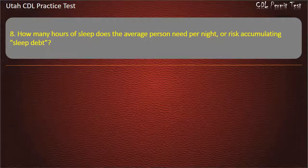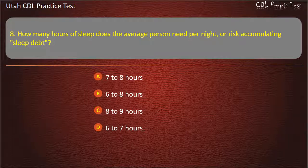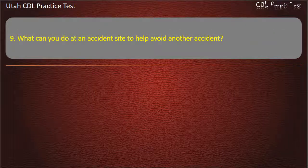Question 8. How many hours of sleep does the average person need per night or risk accumulating sleep debt? 7 to 8 hours. 6 to 8 hours. 8 to 9 hours. 6 to 7 hours. Answer: 7 to 8 hours.